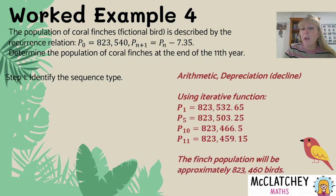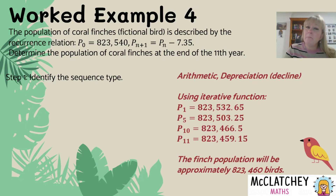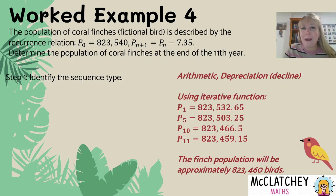Finally, write your statement: the finished population will be approximately 823,460 birds. I've included the word 'approximately' because it won't be exactly that number right at the end of the 11th year. Whether you round up or down, it won't make a massive difference — chances are you'll be marked correct as long as you've rounded to the nearest whole bird.